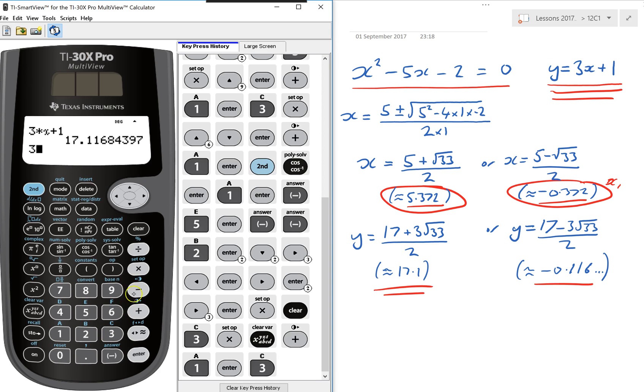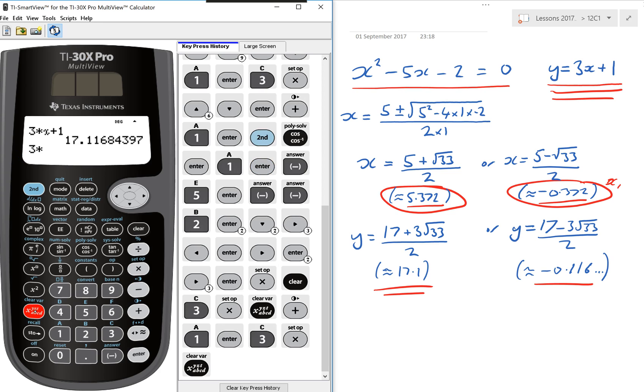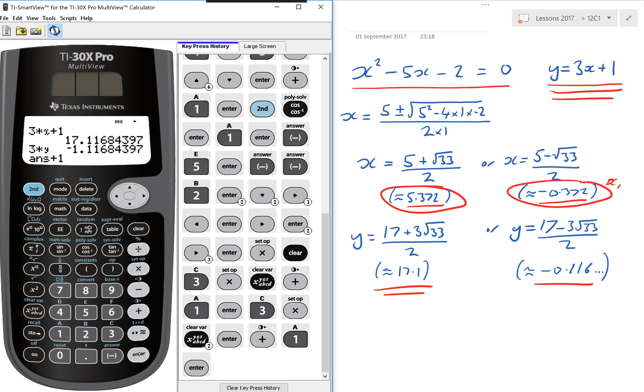Or I could do 3 times, and then choose y. By clicking that one, click it twice, takes me to the y. And enter that. Well, I should have added 1. So I'll add 1. And that gives me this value here.